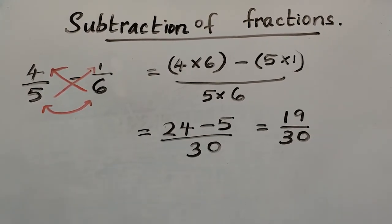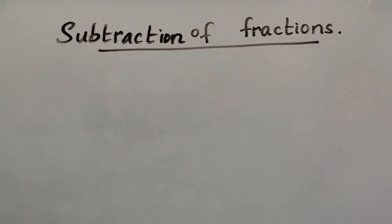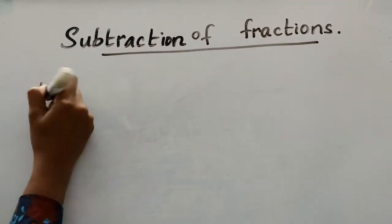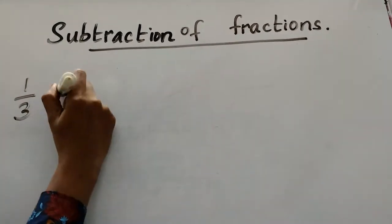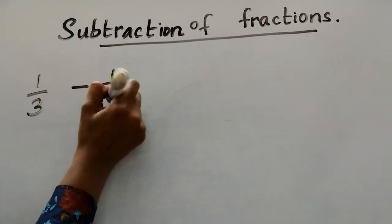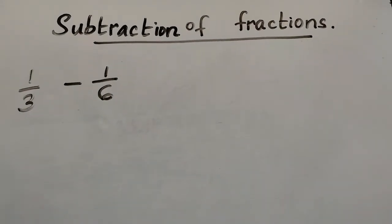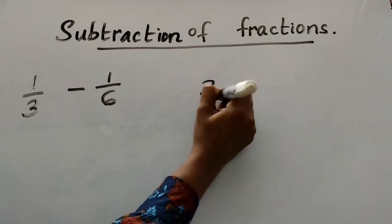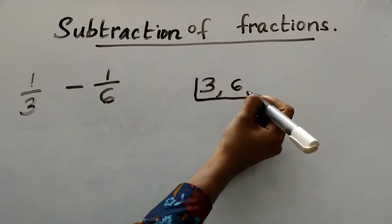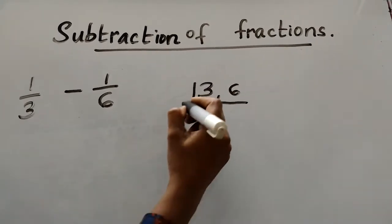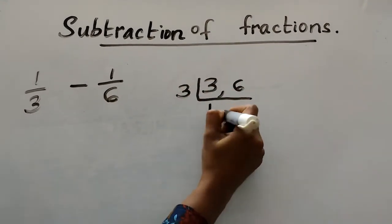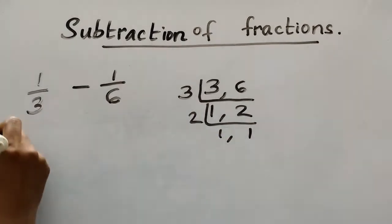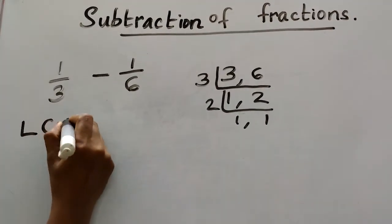For unlike fractions, the denominators are different, so we find a common factor. For example, 1 by 3 minus 1 by 6 — the denominators are 3 and 6. We find the LCM of the denominators 3 and 6. The LCM of 3 and 6 is 6.